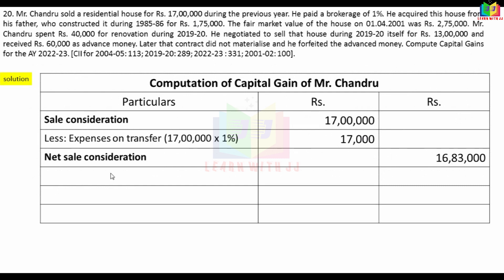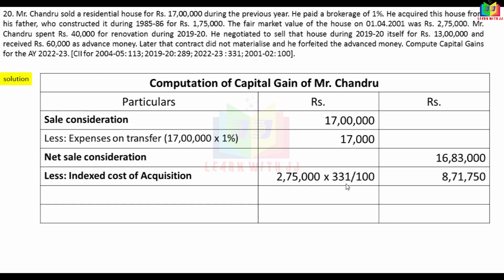Indexed cost of acquisition: FMV on 1-4-2001 is Rs.2,75,000 multiplied by CII of year of transfer 331, divided by CII of base year 100, equals Rs.8,71,750. Cost of improvement: renovation done in 19-20 is Rs.40,000. Indexed cost of improvement = 40,000 × 331 (CII of transfer year) divided by 289 (CII of improvement year).